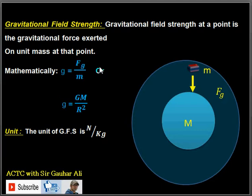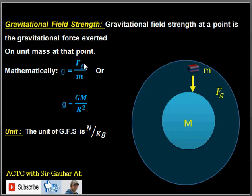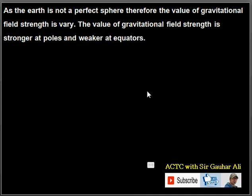The mathematical form is g equals GM divided by r squared. The unit of gravitational field strength is Newton per kilogram (N/kg), because force is measured in Newtons and mass in kilograms. So the unit of gravitational field strength is Newton per kilogram.